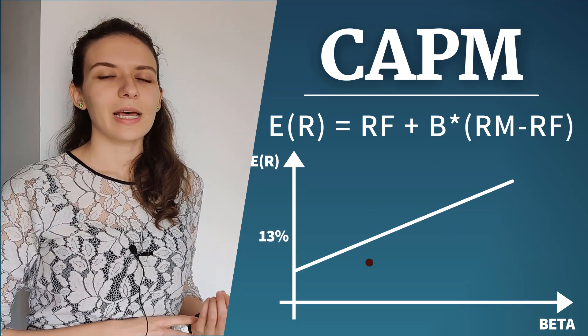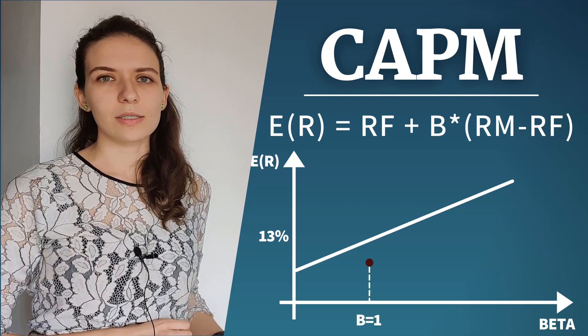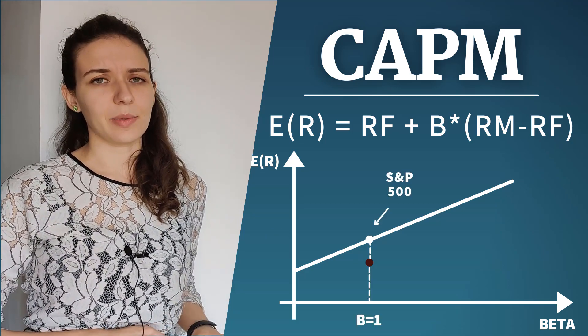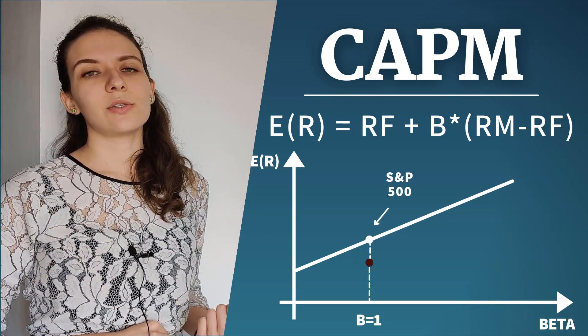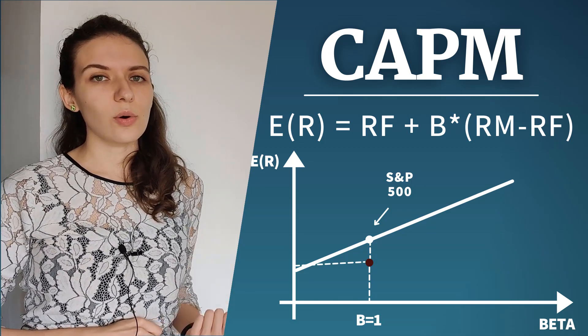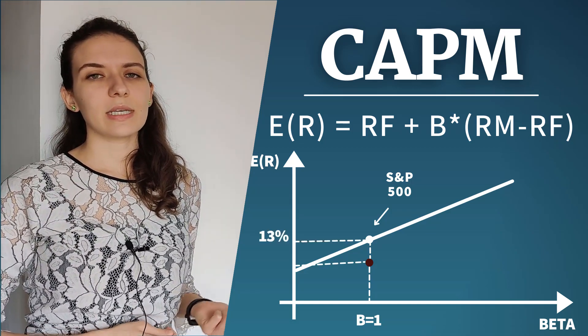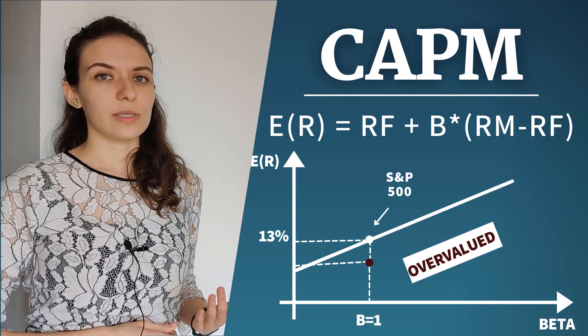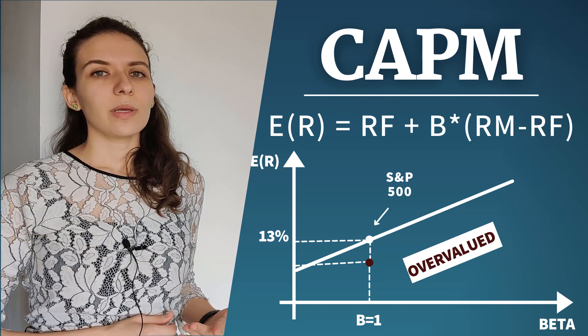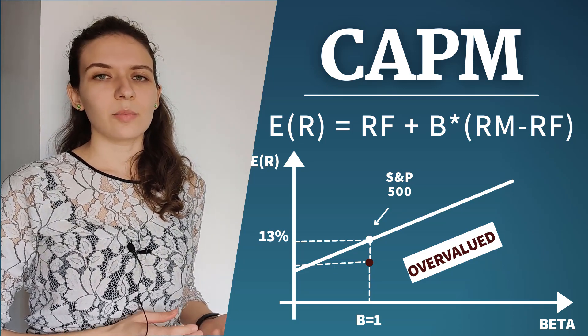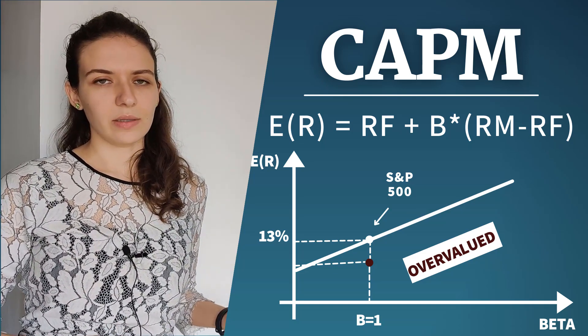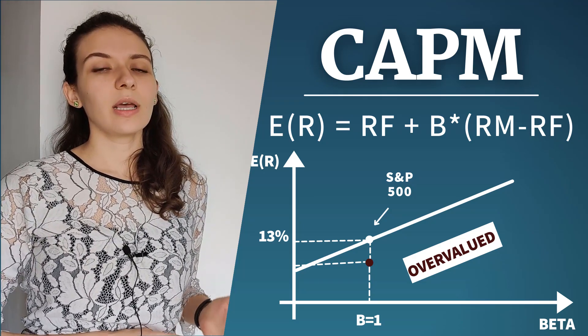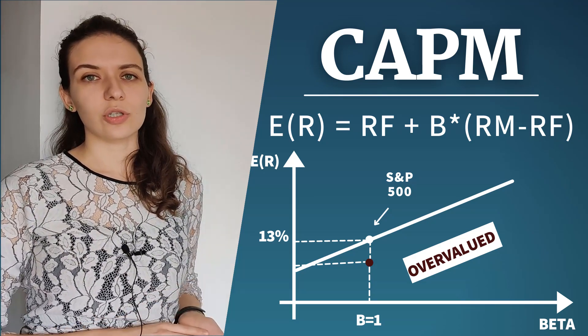Consider as an example a stock with a beta of 1, so exactly as risky as the market. Now imagine that it gives you an expected return which is lower. In that case the security is overvalued because it's not able to give you enough compensation for the risk that you are taking and you'd be much better off investing in the broad index via an index fund that tracks the Standard & Poor's 500 rather than taking a position into that stock.